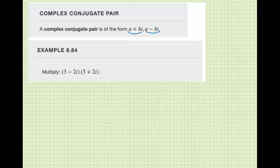These are very important in the complex number system because if you multiply a complex conjugate pair, the result is going to be a real number because all the i's cancel out. Let's look at this example and see what happens.